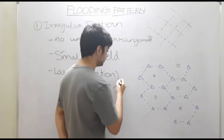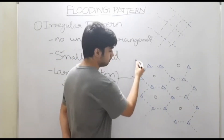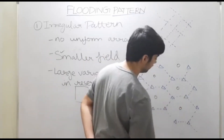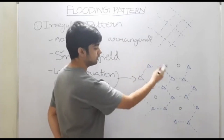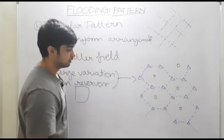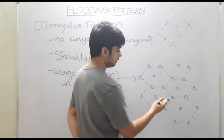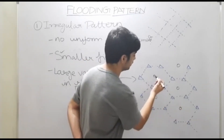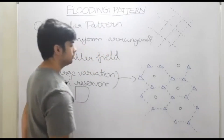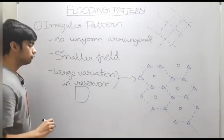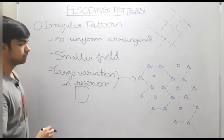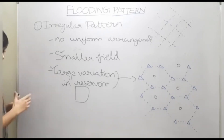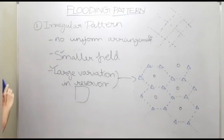For example, consider a field where one portion has different permeability and another portion has different permeability, but the pattern used is regular. Because of that variation, the recovery factor in one region will be different from the recovery factor in another region. Therefore, we cannot use a regular pattern where the variation in the reservoir is very high, or where reservoir heterogeneity is high. This is when the irregular pattern is applied.